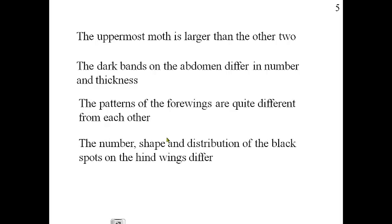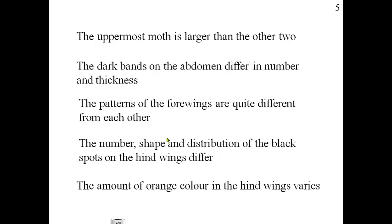The number, shape, and distribution of black spots on their hind wings differ. The trait is the presence of black spots, and the variation is that the number and shape of them differ from one butterfly to the next. Finally, the amount of orange color on their hind wings also varies.